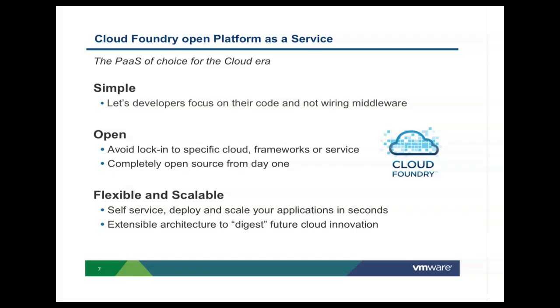Think of PaaS as kind of the new cloud OS. When we're talking about PaaS, we believe it needs to follow three core principles. It needs to be simple — it lets developers focus on their code and not wiring middleware. As you will see in the demo, when you're deploying an application with Cloud Foundry, you're doing one command line, VMC push, and you don't wire any middleware underneath it. Open — you cannot be locked into a specific cloud. When you choose your PaaS, you don't choose your cloud, you don't choose the stack of frameworks or services from a single vendor, and most importantly, you don't have to choose the infrastructure you're running on. When you choose your PaaS, you basically choose a programming paradigm — not a deployment destination, a stack, or a set of services.